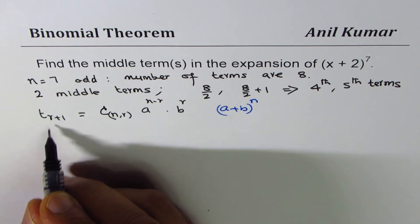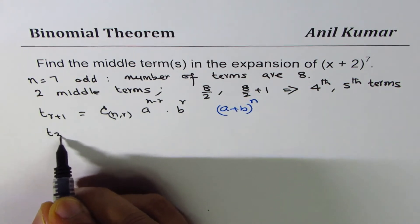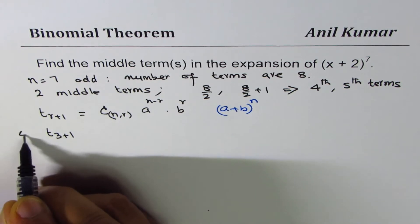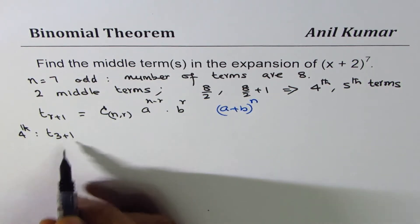So the 4th term will be R equals to 3. So if I write 3 then I get the 4th term. This is my 4th term, 3 plus 1.